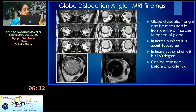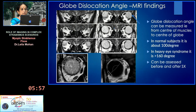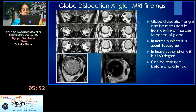You can see here the globe dislocation angle between the lateral rectus and superior rectus. It is about 100 degrees in normal individuals, which increases to almost 160 degrees or more, and can be assessed before and after surgery in these cases.